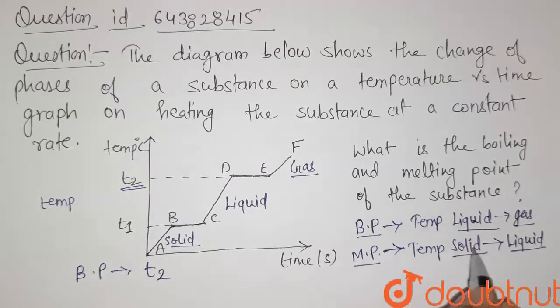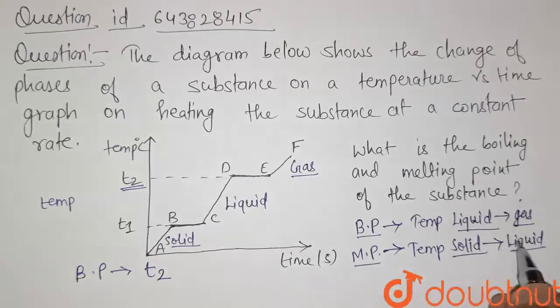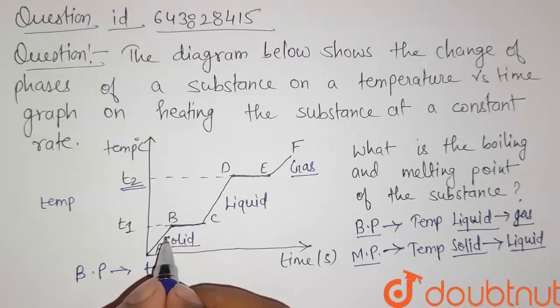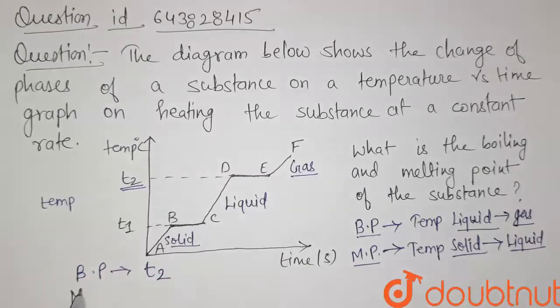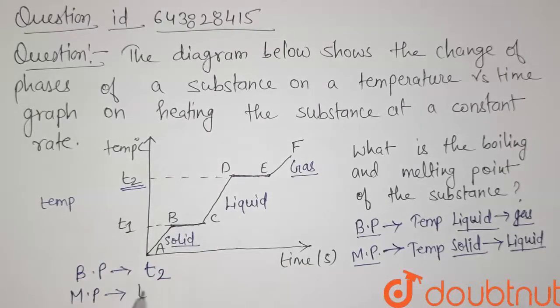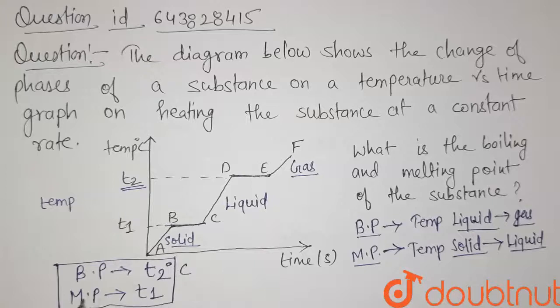Now melting point is the temperature when solid converts into liquid. So solid converting into liquid at this temperature T1. So melting point here is T1. So that's our solution for this question. Boiling point is T2 degree Celsius and melting point is T1 degree Celsius.